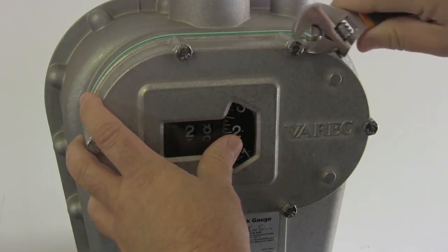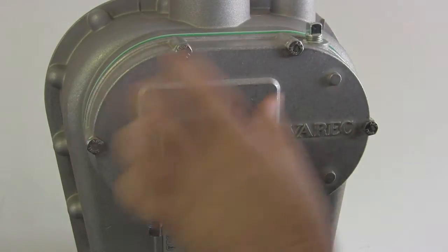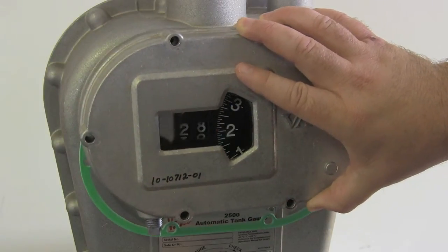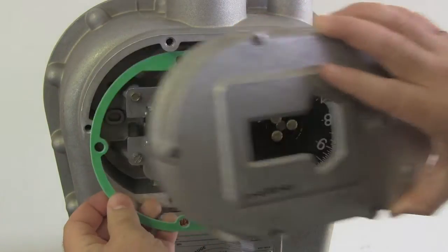First, to access the counter mechanism, remove the six cover bolts and display cover. As with any maintenance process, you can use this opportunity to check items such as the gasket.